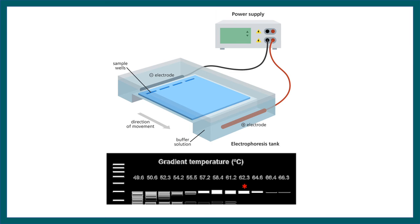And in this particular example, you can see at 62.3 degrees Celsius temperature, the amplification is more or less specific and with very low primer dimer. So this particular temperature could be an optimal temperature for conducting this kind of PCR reaction.